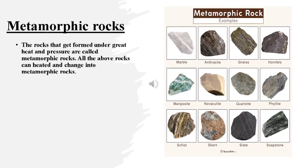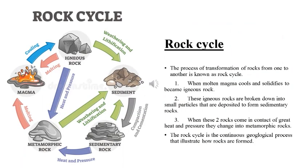Now we will discuss the rock cycle. It is the process of transformation of rock from one type to another, known as the rock cycle. When the molten magma cools, it solidifies to become igneous rock. These igneous rocks are broken down into small particles that are deposited to form sedimentary rocks. Look at the picture in the slide showing how from magma, igneous rock is formed, and then from igneous rock, sedimentary rock is formed.